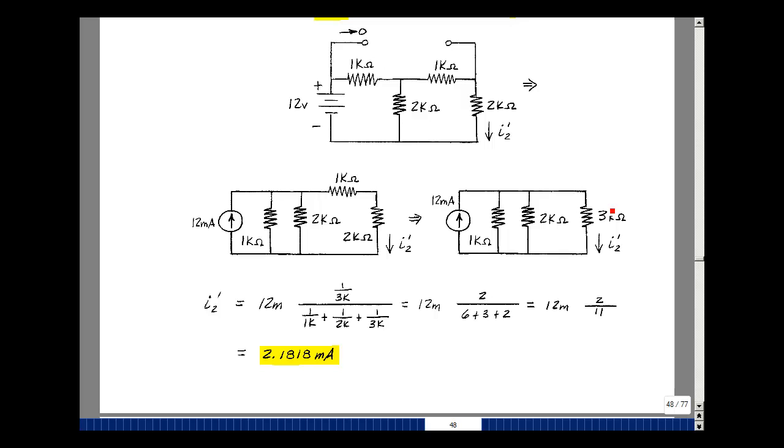Using current divider, we can find the current as 1 over this conductance over the sum of the three conductances times the 12 milliamps. Let's multiply the numerator and denominator by 6,000. That gives me 2, 6, 3, and then 2. That turns out to be 2.18 milliamps.